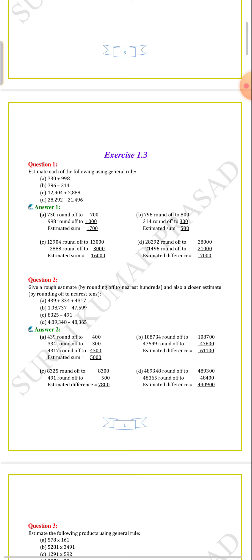For example, take the number 108. If asked to round off to the nearest 10, the answer is 110 because the nearest 10 of 108 is 110. If asked for the nearest 100, we say 100, because 100 is nearer to 108 than 200 is.